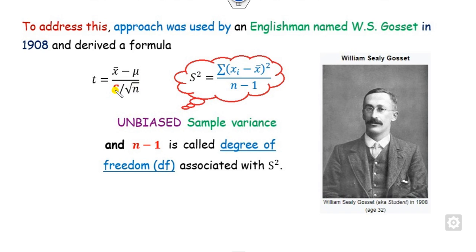What is S in this case? S is nothing but the unbiased sample variance, and the formula is written here. The denominator, n minus 1, is called the degree of freedom. The degree of freedom is a new term associated with this statistic.